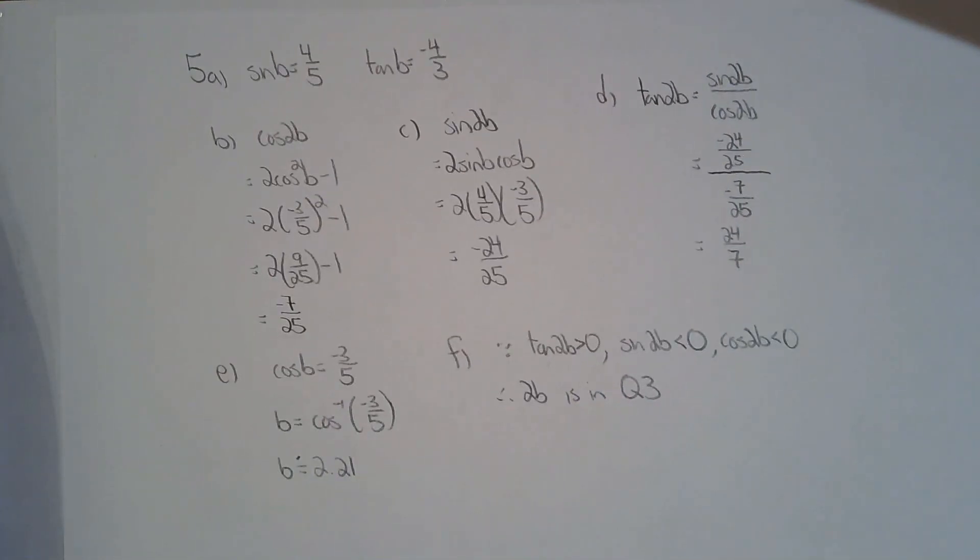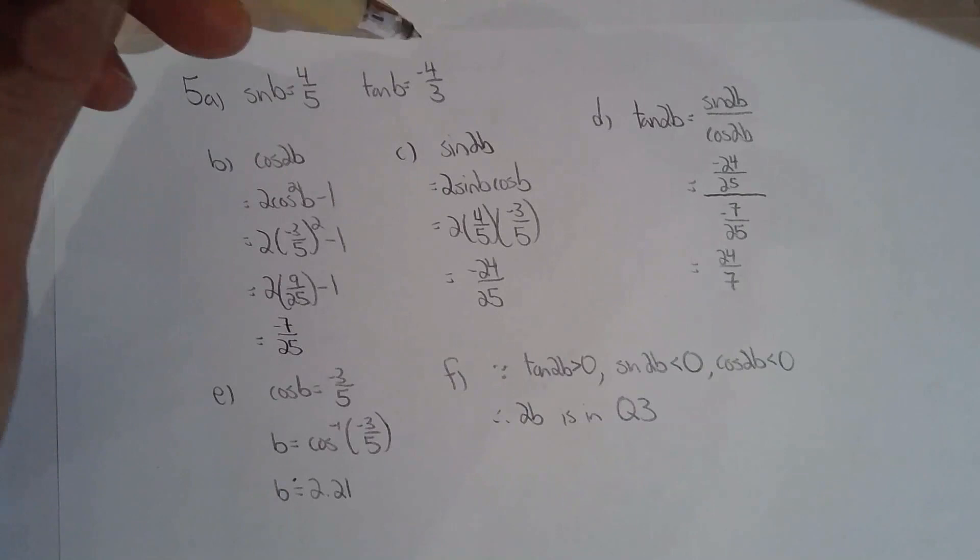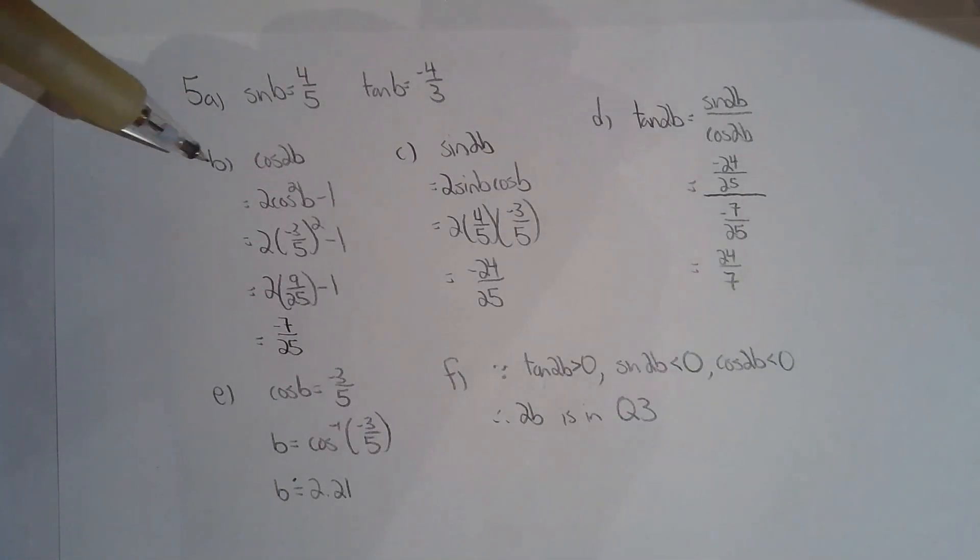Okay, for the last question, they tell me what cos b is. They tell me cos b is negative three over five. So once again, Pythagorean triple three, four, five. So they also said that angle b is in the second quadrant. So sine b is four fifths, tan b is negative four thirds.